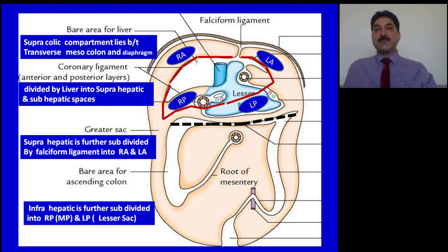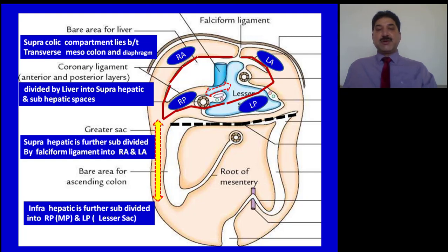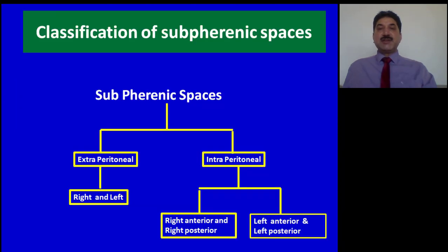In total, there are four intraperitoneal spaces in the supracolic compartment: right anterior, right posterior, left anterior, and left posterior. As shown in this diagram, the lesser sac communicates with the greater sac through the epiploic foramen, also called the foramen of Winslow. Morrison's pouch communicates with the pelvic cavity through the right paracolic gutter.